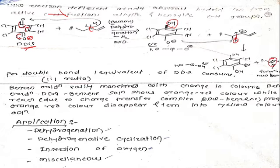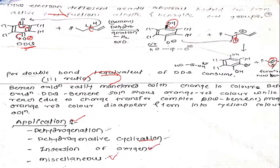There is formation of OH and this oxygen becomes negatively charged. Then this negatively charged oxygen abstracts the proton of the allylic CH compound and there is formation of a double bond. For one double bond, one equivalent of DDQ is consumed — it requires a 1:1 ratio. DDQ is mostly useful for dehydrogenation, dehydrogenative cyclization, insertion of oxygen, and some miscellaneous reactions.